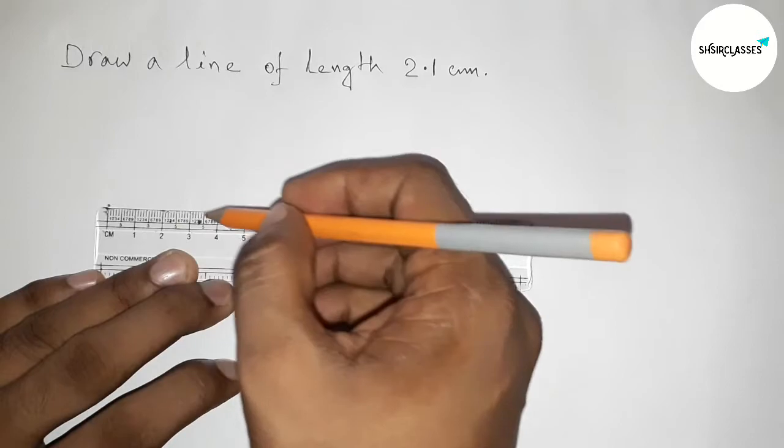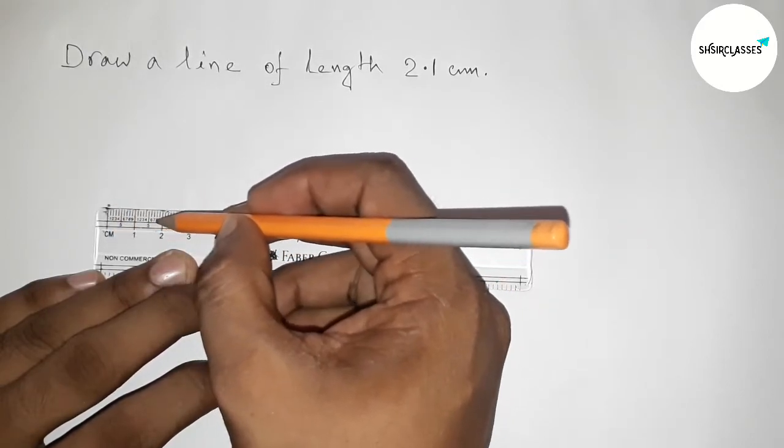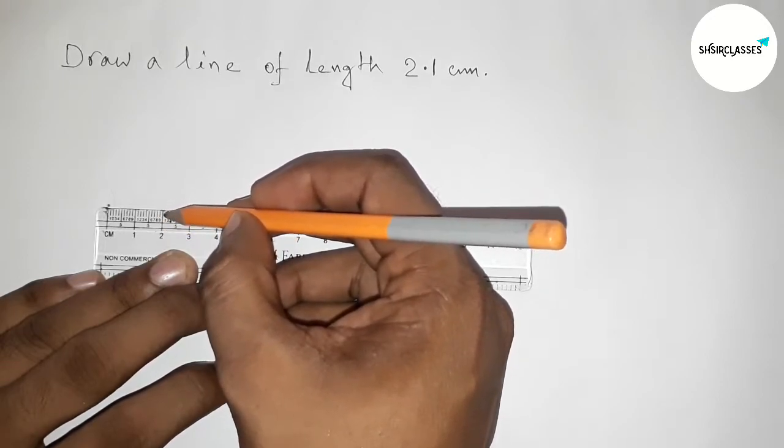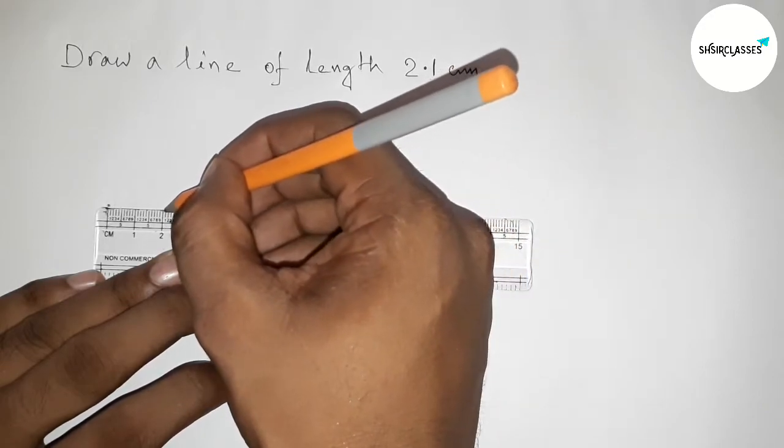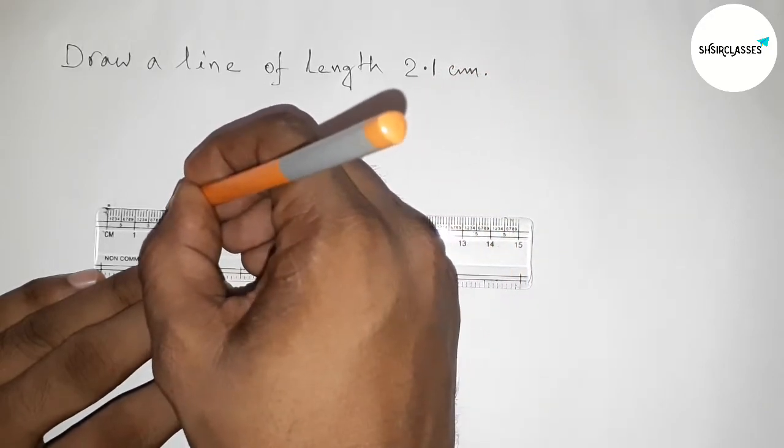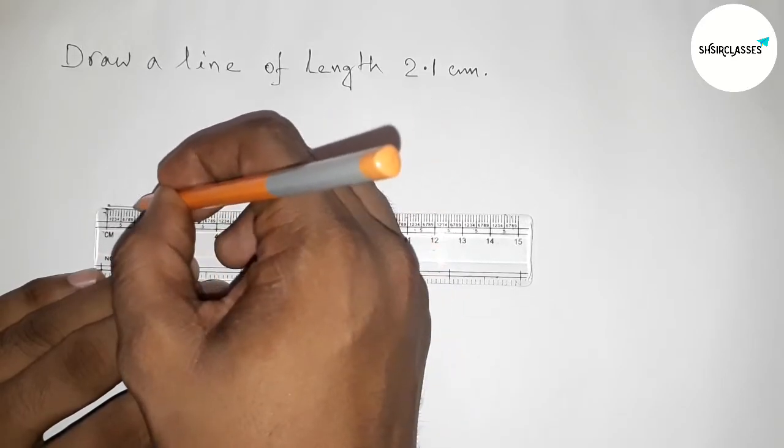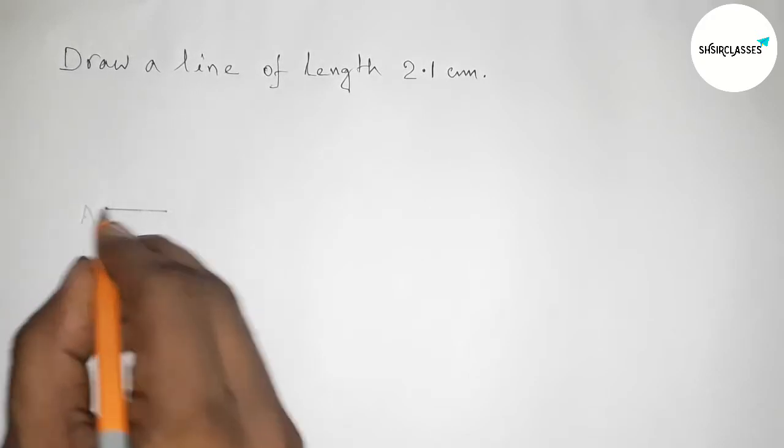And now counting - so this is one, and this is two, two centimeter, and this one 2.1 centimeter length. So this one 2.1, so marking here and joining this line and taking a point on both sides.